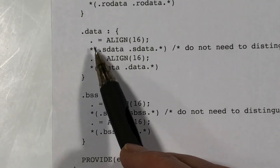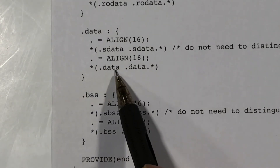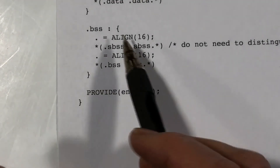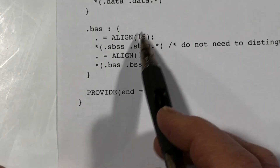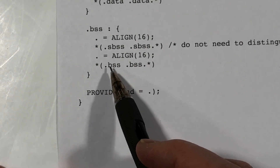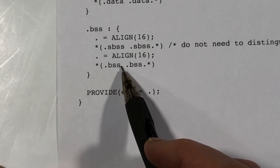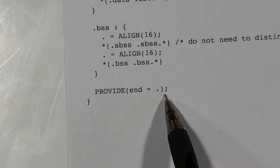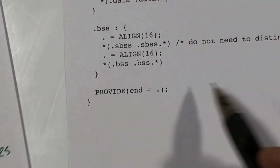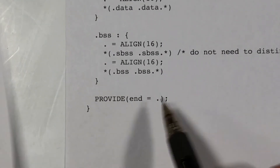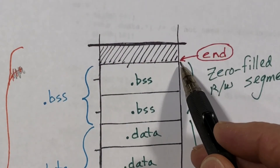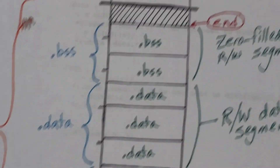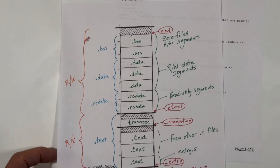For BSS, we have a similar thing going on — picking up all the sections that have names starting with dot BSS. And finally we define the name end at wherever we end up. We might not be on a page boundary because there was no page alignment here, so we just mark end right there. That then allows the linker to produce the executable file that we want, and it will be loaded into memory at the right address so the code will work properly.